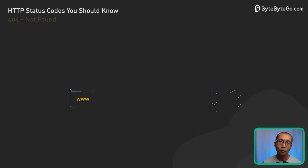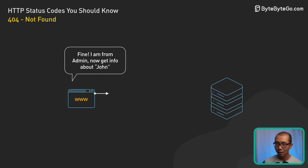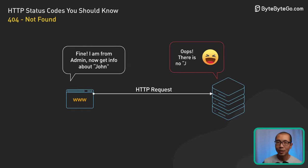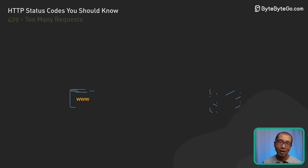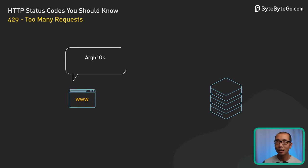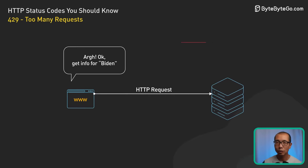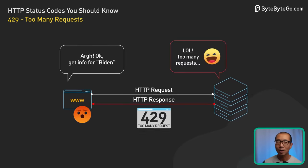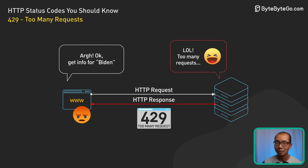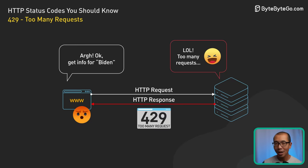The 404 Not Found is the classic — the requested file isn't there, so double check those routes and endpoints. A status code that many developers encounter is the 429 Too Many Requests. It's the server's way of saying hey, slow down — we are sending requests too fast and hitting rate limits. For busy APIs, we'll need to adjust by implementing retries with backoff.